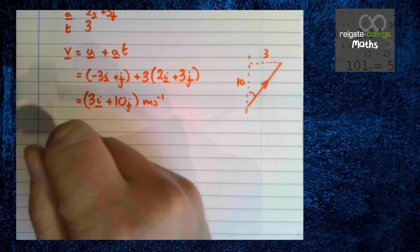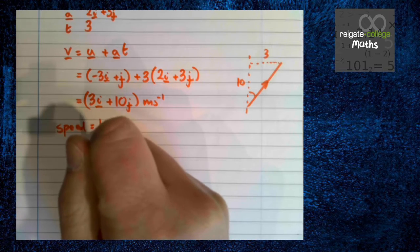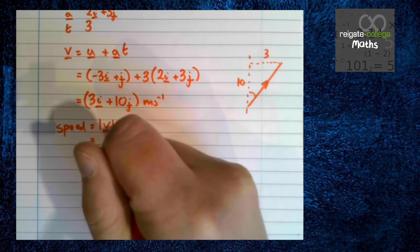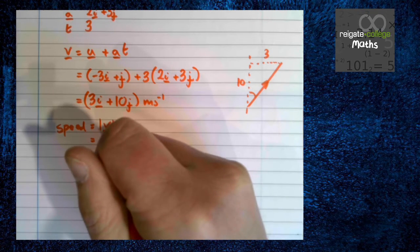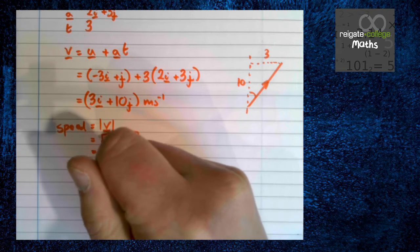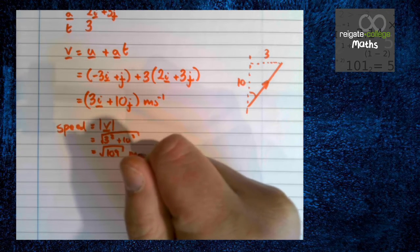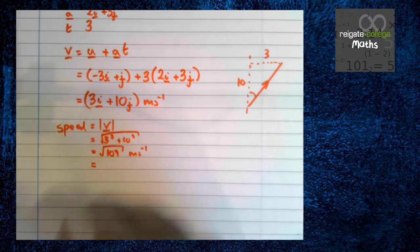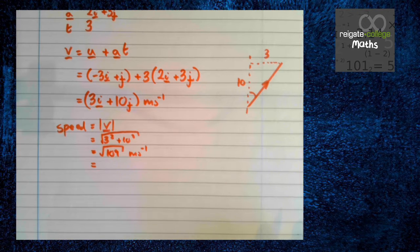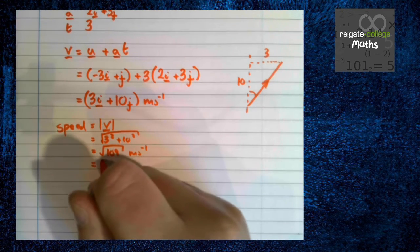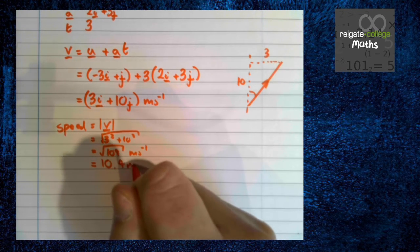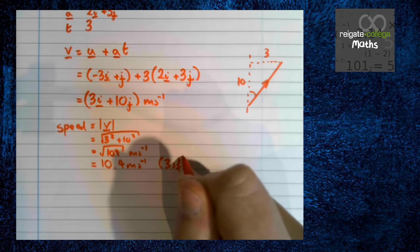So we want speed. That's the magnitude of v. We've got 3 squared plus 10 squared square rooted which comes out as root 109 meters per second. Now we're doing mechanics, so strictly speaking we should be rounding that because the numbers actually mean something. A speed of root 109 meters per second doesn't really mean much, whereas a speed of 10.4 meters per second to 3 significant figures means something.